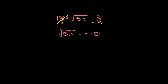Now in order to get rid of a square root, all you have to do is square it. So we're going to square this side and we're going to square this side. On this side the square root and the squared exponent cancel out, so you're just left with 5n is equal to negative 10 squared, which is positive 100.